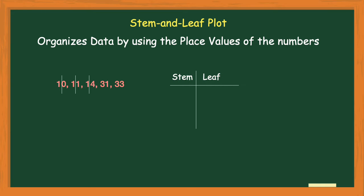When I get to my next number, 31, instead of having a one in the tens place I have a three, and my one will be in the ones place as my leaf — same for 33. The three in the tens place will be my stem and the three in the ones place will be my leaf. My stem and leaf plot is separating the tens and the ones.